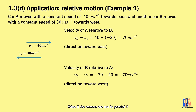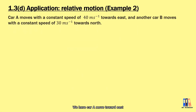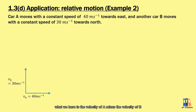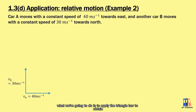But what if the vectors are not in parallel? Let's see another example. Car A moves toward east and another car B moves toward north. If you want to find the velocity of A relative to B, we have the velocity of A minus the velocity of B. Since both velocities are not in parallel, we apply the triangle law to obtain the relative velocity.